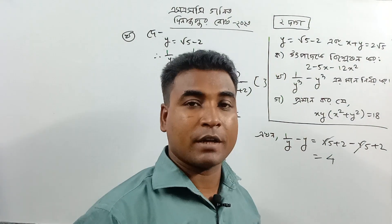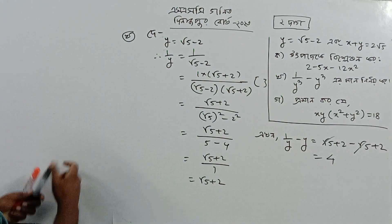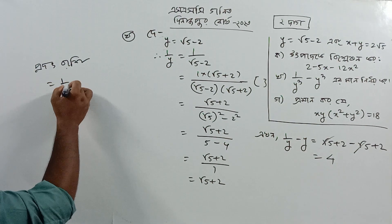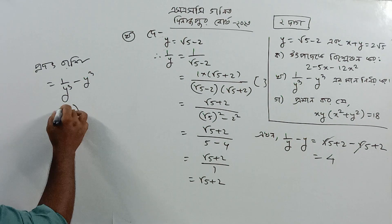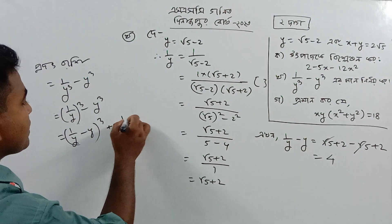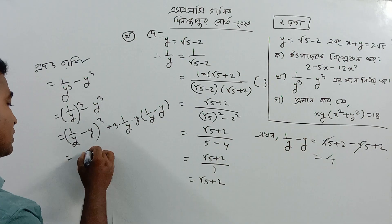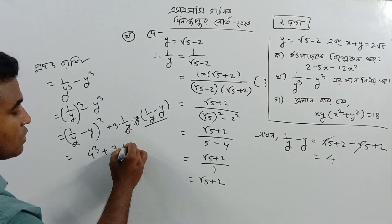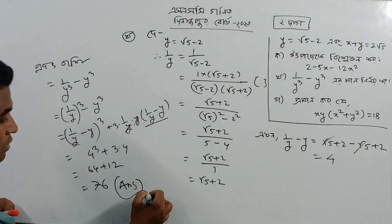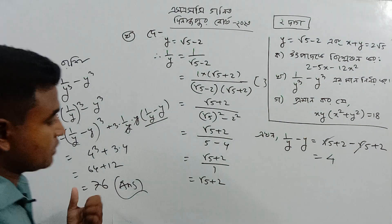1 by y minus y is equal to 4. Using the identity a minus b cubed equals a³ minus b³ minus 3ab(a minus b), cube plus 3 into 8, which equals 4 cube plus 3 into 8, giving us 4 cubed plus 24 equal to 64 plus 24 equal to 88. The answer is 52.